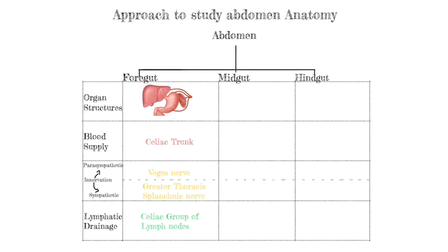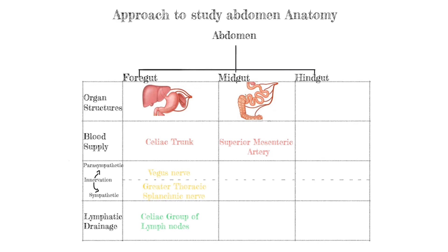You would like to go through the same approach with the midgut and hindgut. You start off with the organ structures in the midgut, and then the blood supply for those organ structures will be the superior mesenteric artery. You then go into the innervation — parasympathetic for the midgut will be once again the vagus nerve. For sympathetic, it will be the lesser and least splanchnic nerve. The lymphatic drainage for the midgut will go to the superior mesenteric group of lymph nodes.